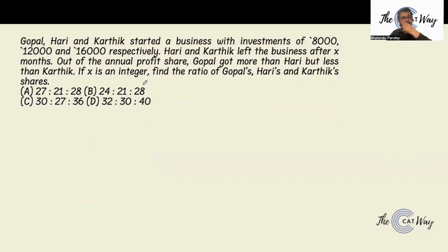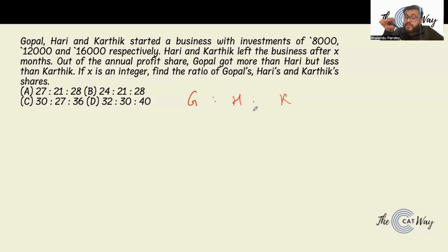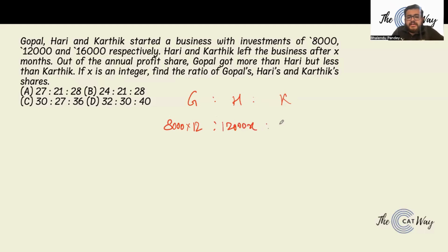Next: Gopal, Hari and Karthik started a business with investments of 8,000, 12,000 and 16,000 respectively. Hari and Karthik left after X months. From the total annual profit, Gopal got more than Hari but less than Karthik. X is an integer — find the ratio of their shares. The shares are proportional to investment times time: Gopal gets 8,000 times 12, Hari gets 12,000X, Karthik gets 16,000X. Removing three zeros: 96 to 12X to 16X.